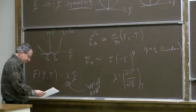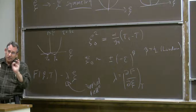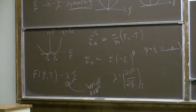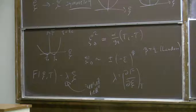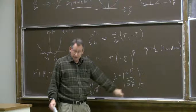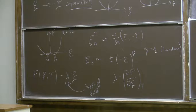We can consider the susceptibility, which tells us how the system responds when the temperature is close to T_c and we turn on an external field. The susceptibility is the derivative of the order parameter with respect to the applied field at fixed temperature. The inverse susceptibility is the second derivative of the Helmholtz free energy with respect to the order parameter at fixed temperature.